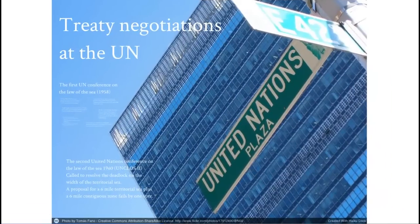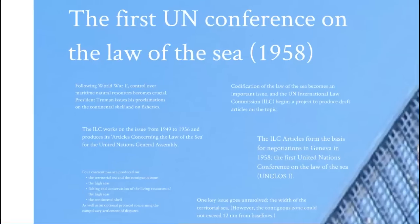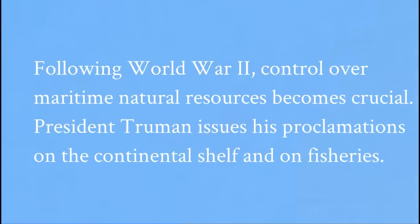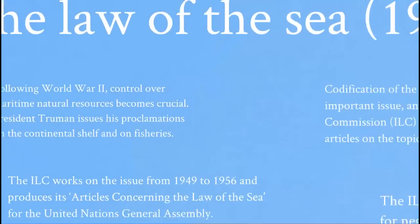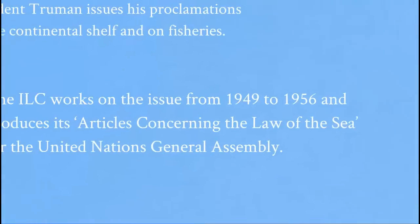After little progress at the League of Nations, we turn to the United Nations era after 1945. Following World War II, there was increasing state interest in control over maritime natural resources. President Truman of the United States issued proclamations on US control of its continental shelf and fisheries adjacent to the coast. That development made codification of the Law of the Sea an important issue. The United Nations International Law Commission — the ILC — a committee of experts that reports to the General Assembly on legal issues, begins a project to produce draft articles on the Law of the Sea that could eventually be turned into a treaty, representing both a codification and progressive development exercise.